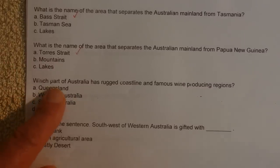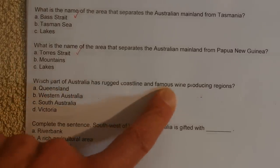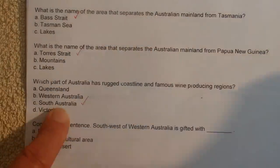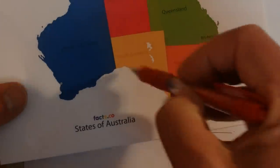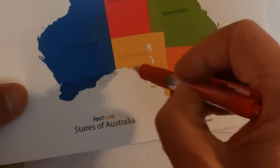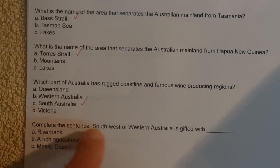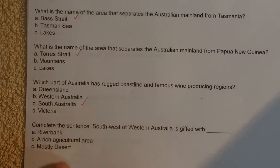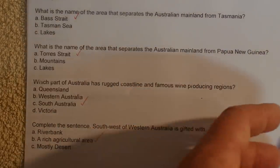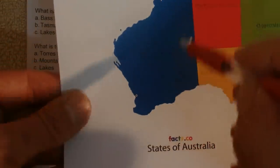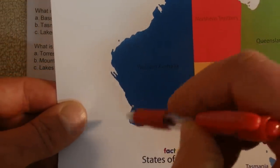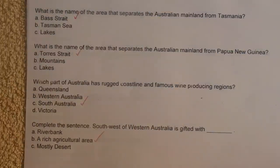Which part of Australia has a rugged coastline and famous wine-producing regions? South Australia. The Great Australian Bight is a rugged coastline. Southwest Western Australia is gifted with a rich agricultural area — big chunks of Western Australia are desert, but this part is rich. That's all I've got time for — I hope you've enjoyed this video. Thanks for watching and goodbye for now.